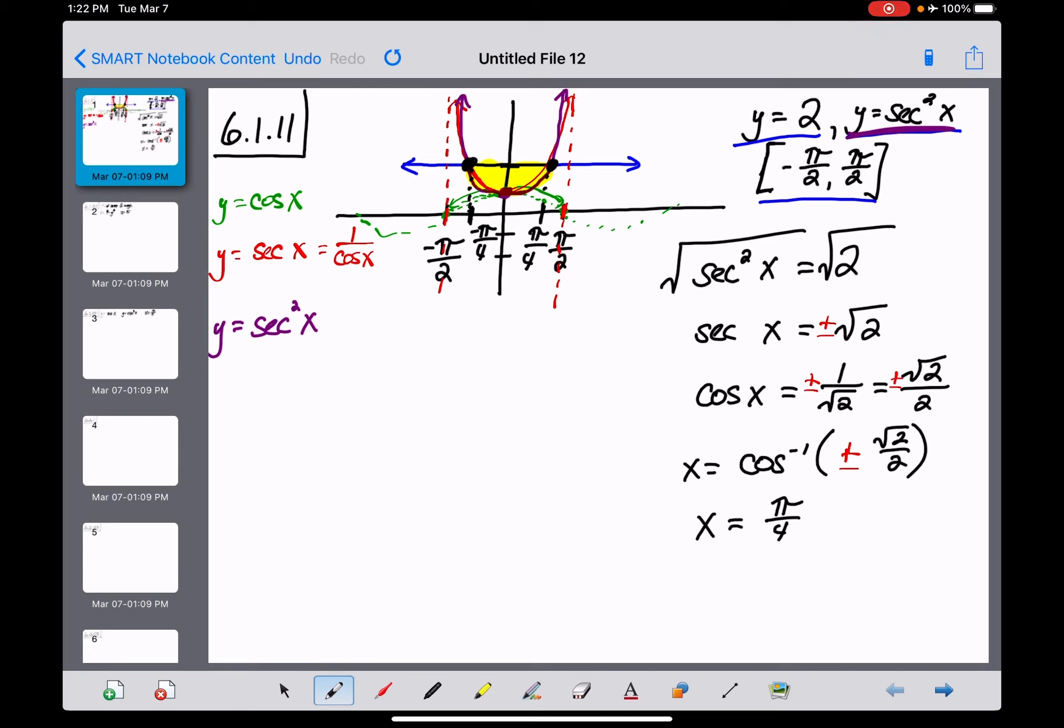We have to decide, is this a horizontally or vertically simple region? I think we'll do this one straightforward, the normal way, running our rectangles vertically. The area of this region will be an integral taken with respect to x since those rectangles run vertically. The integrand is the top curve minus the bottom curve. So the top is y equals 2 minus the bottom, secant squared of x, all taken with respect to x.